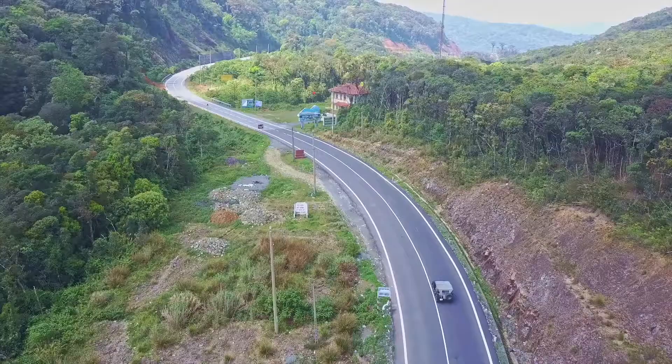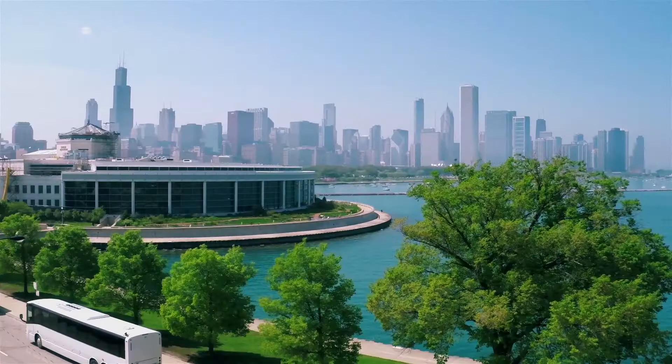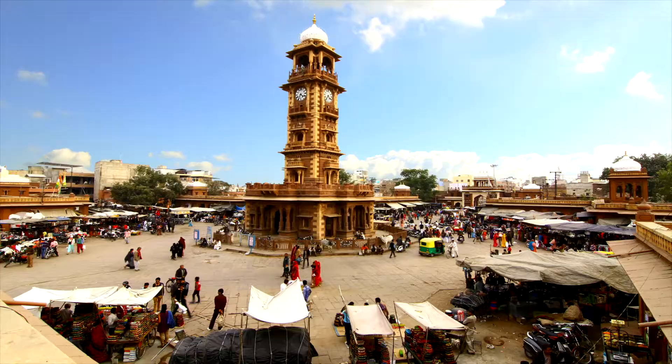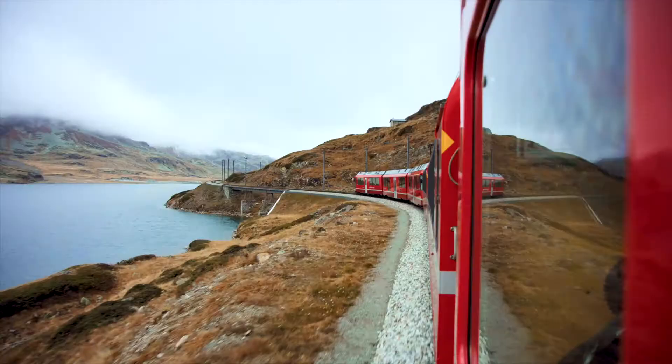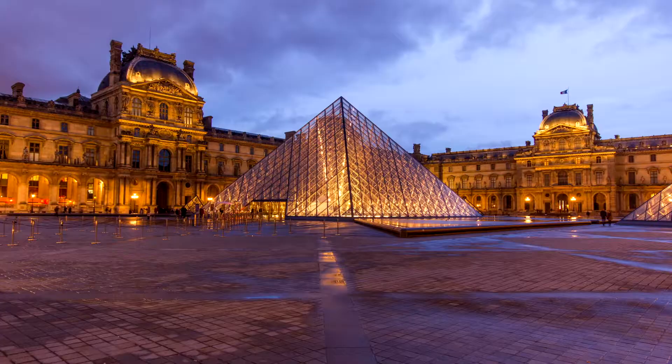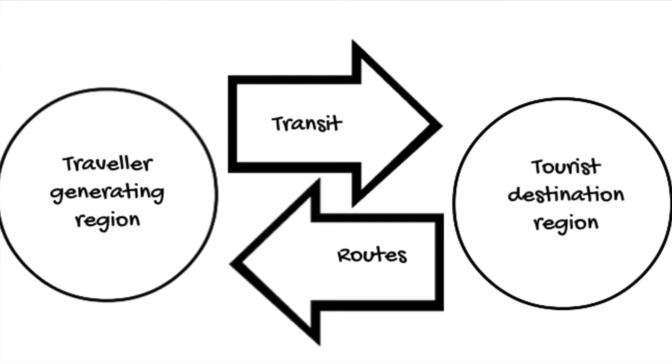The tourist destination region is the place that tourists are traveling to. Again, this isn't entirely clear at what level of detail — it could be the country being visited, the area of the world, or a specific street — but it means the place they are going to. In this tourist destination region you will likely find many elements of the travel and tourism industry, such as accommodation, transport options, entertainment options, and tourist attractions.